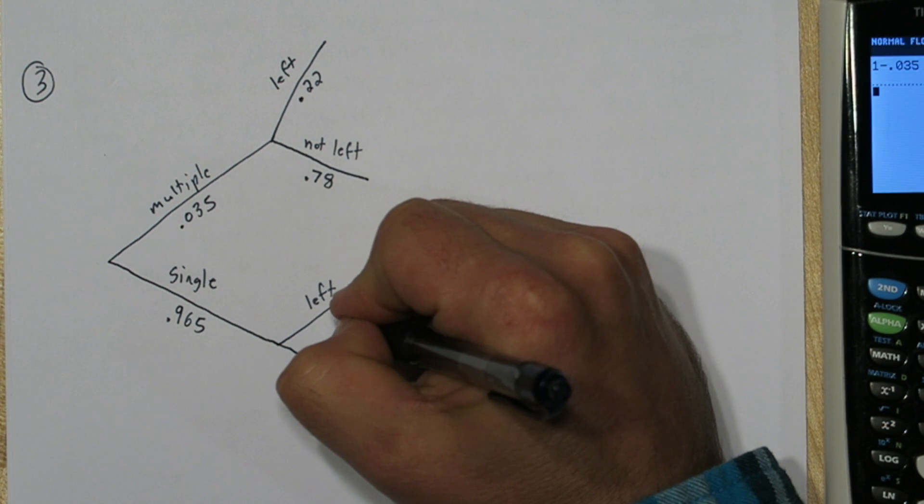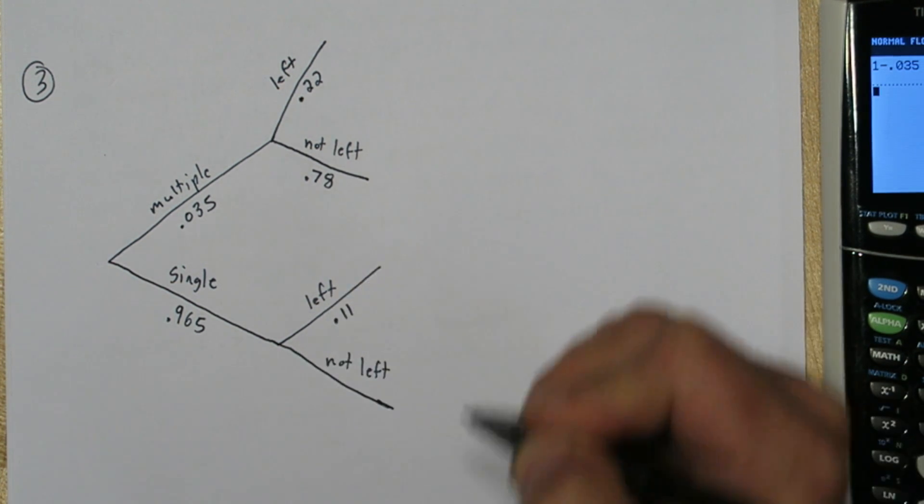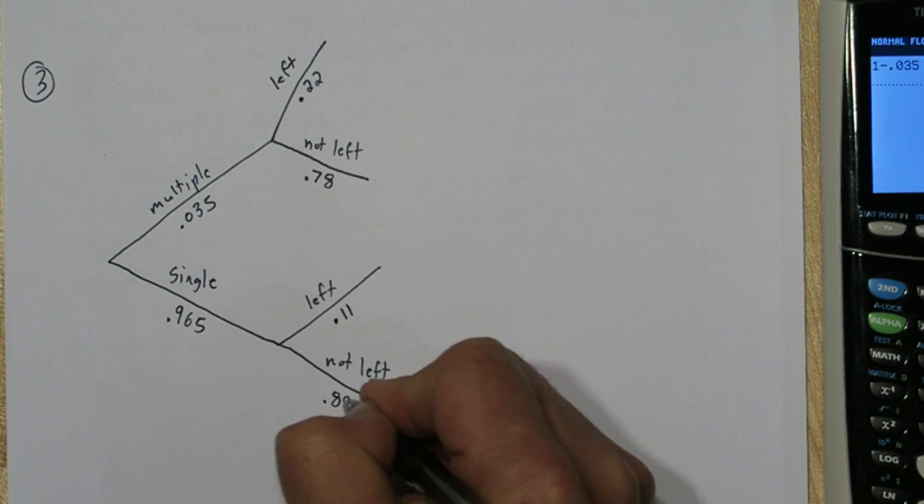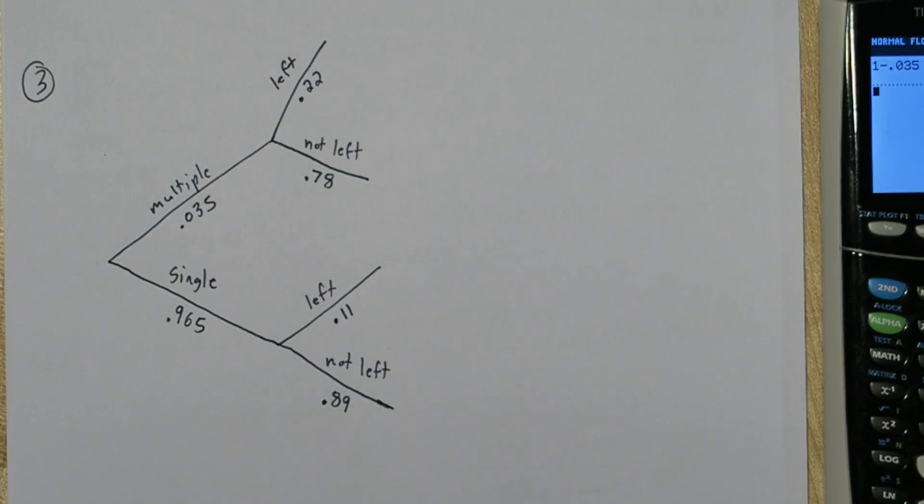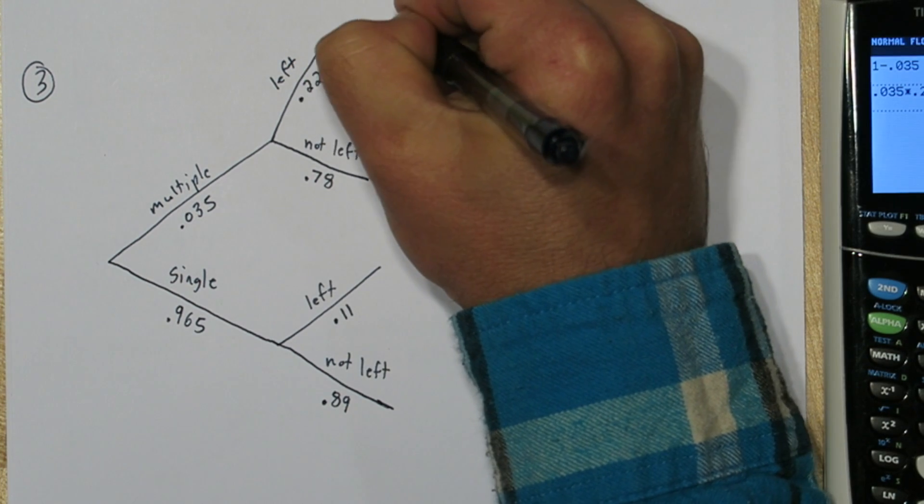Now for single births it's 0.11. The complement of that is 0.89. Now to find the probability a child is part of a multiple birth and left handed we can just multiply down this branch. So 0.035 times 0.22. That ends up being 0.0077.